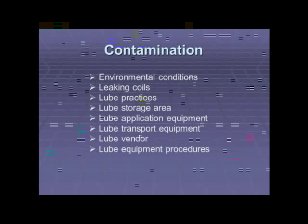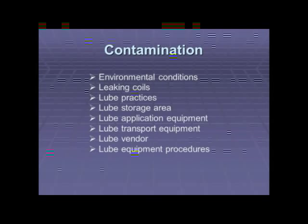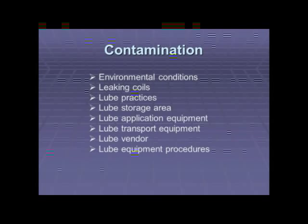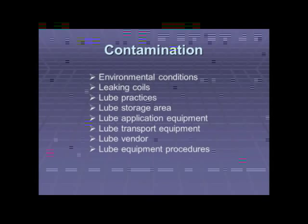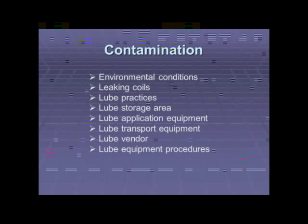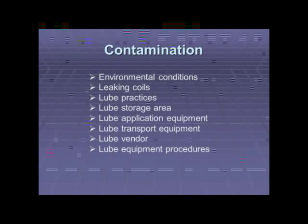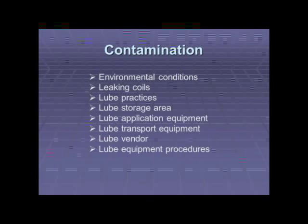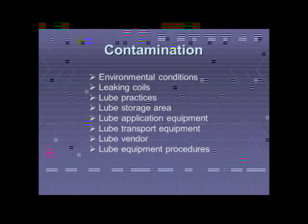Contamination — where does it come from? Environmental conditions, leaky coils from cooling systems. At a plant in Korea, they had cooling coils around ovens that were actually leaking into the lube and causing very short equipment life. Lube practices, the lube storage area, your lube application equipment — the containers and grease guns — your lube transport equipment, and your lube vendor. I've been to facilities where the drum-filling conditions at ExxonMobil and other vendor locations are causing contamination of lube products. Lube equipment procedures can also cause contamination. One solution is the use of 10-micron beta-1000 filters.